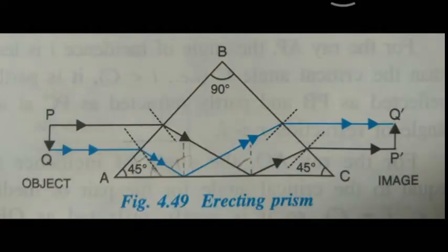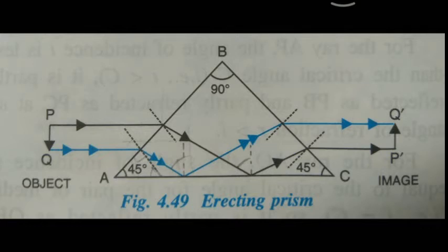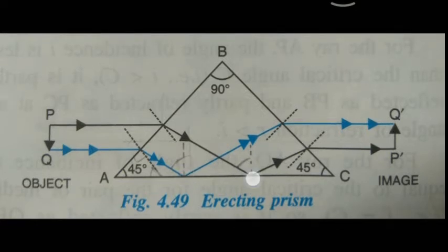Now let us see how a total reflecting prism is used to get an erect image of an inverted object. P'Q' here is the inverted object. Rays of light from P'Q' come from the rarer medium and enter the prism, the denser medium, bending towards the normal upon refraction at face AB. These rays then hit face AC, where the angle of incidence is greater than the critical angle, so they undergo total internal reflection and hit face BC.